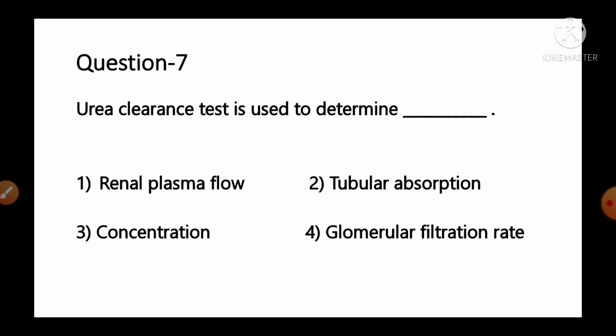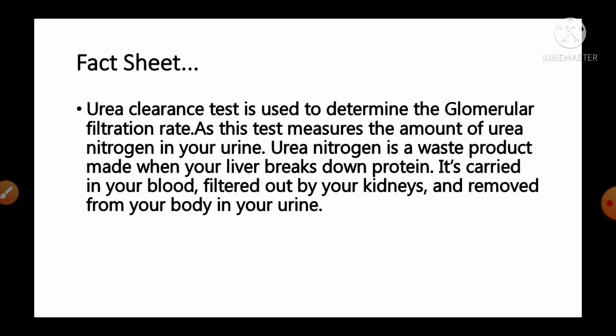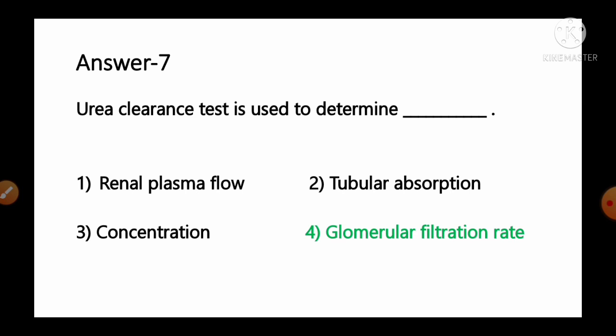Question number 7: Urea clearance test is used to determine — options: 1) renal plasma flow, 2) tubular absorption, 3) concentration, 4) glomerular filtration rate. Urea clearance test is used to determine the glomerular filtration rate. It measures the amount of urea nitrogen in your urine — a waste product made when the liver breaks down proteins, filtered out by the kidneys and removed in urine. So option number 4 is the correct answer.